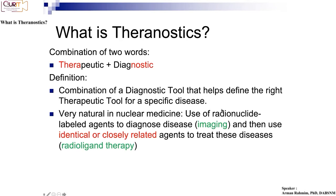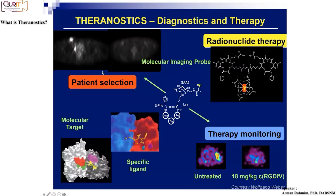Why is theranostics natural for nuclear medicine? Because you could have a radionuclide-labeled agent that targets something to diagnose disease, and then you could have the same one or something closely related that targets the same molecular target, but radio-labeled with something that emits particles instead of gamma rays to do treatment. For example, let's say you've got a cancer cell that expresses a certain kind of protein. If you have a molecule that targets that protein and you radio-label it with something like fluorine-18 used in PET imaging, you can visualize it on a PET scan.